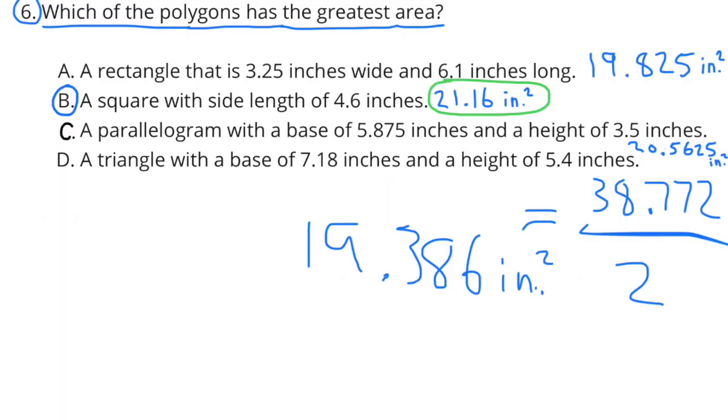Number 6. Which of the polygons has the greatest area? A: A rectangle that is 3.25 inches wide and 6.1 inches long. That comes to a little more than 19 inches squared. B: A square with side length of 4.6 inches. That comes to a little bit more than 21 inches squared.